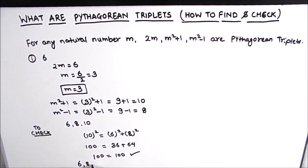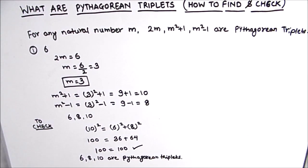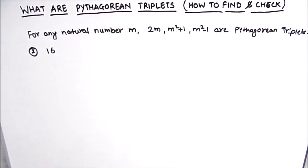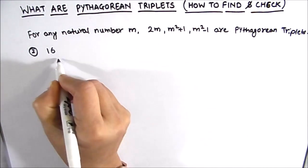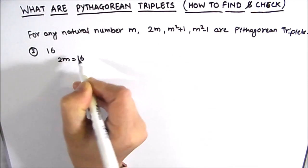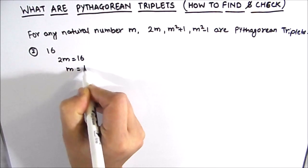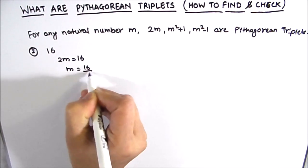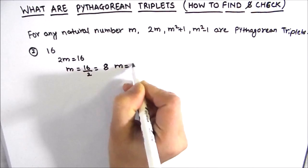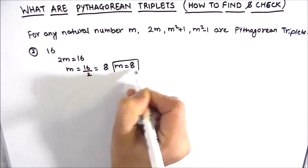Hence the three numbers 6, 8, and 10 are Pythagorean triplets. Let us now solve one more example where one of the Pythagorean triplet numbers is given as 16. Here 2m = 16, so m = 16 ÷ 2 = 8.